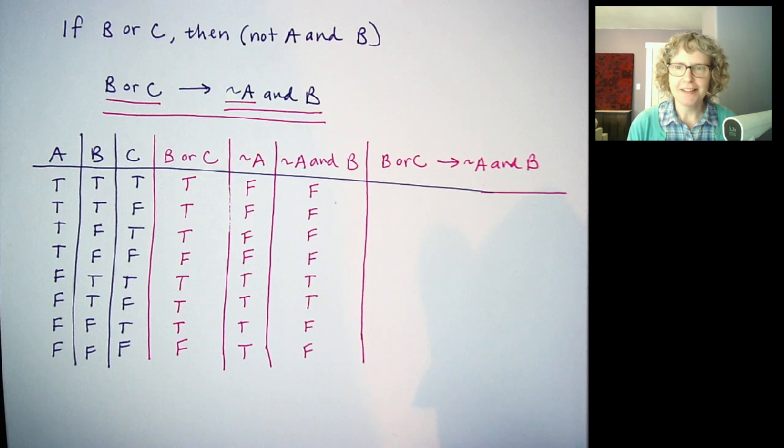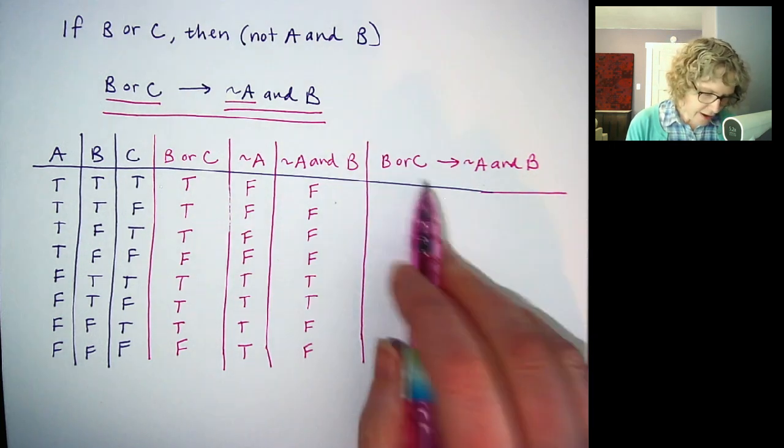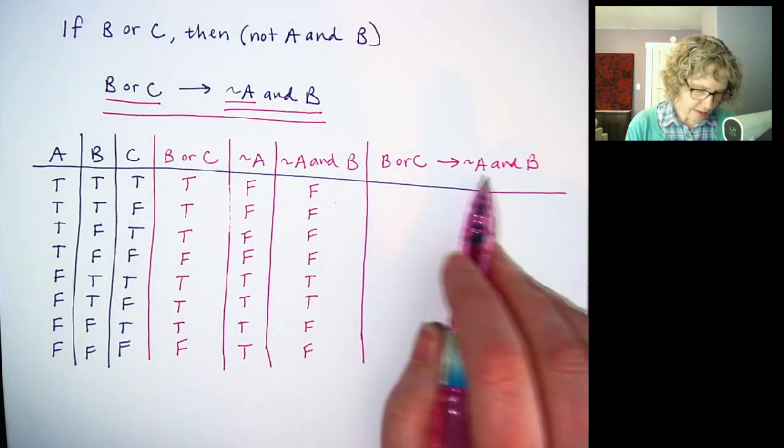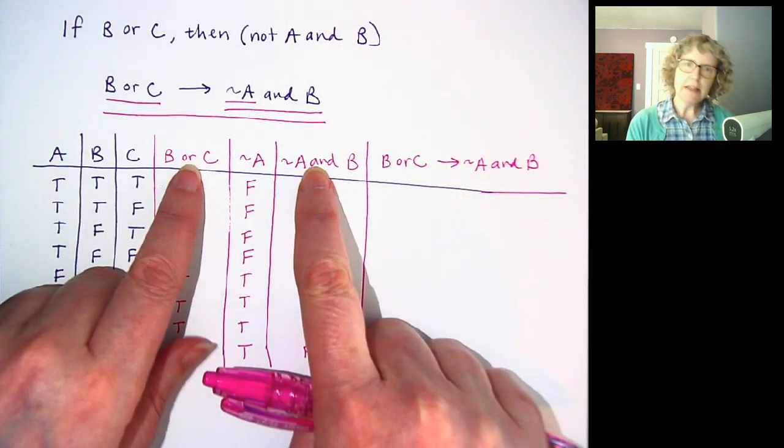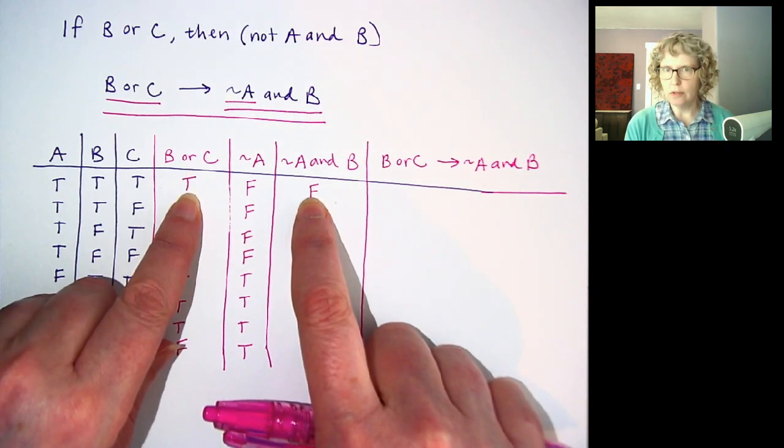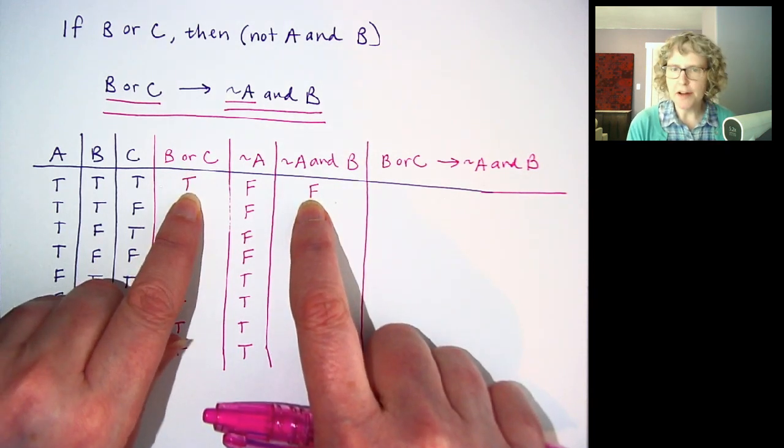Does it help to break it down like this? Helps me. Now we have B or C, if B or C, then, not A and B. So I'm only going to look at these two columns. And I'm going to do the if-then rule. Or think of it as the if-then operation.